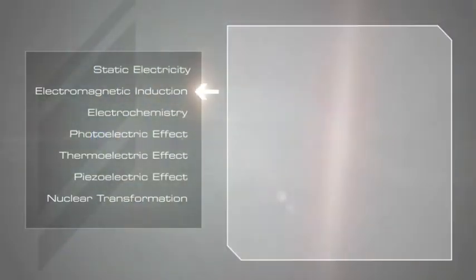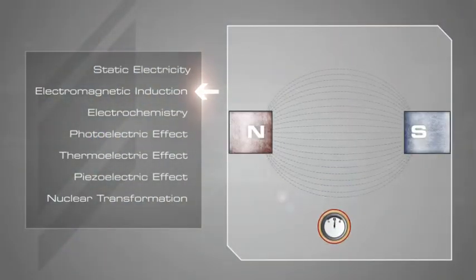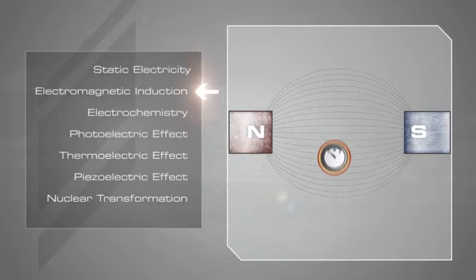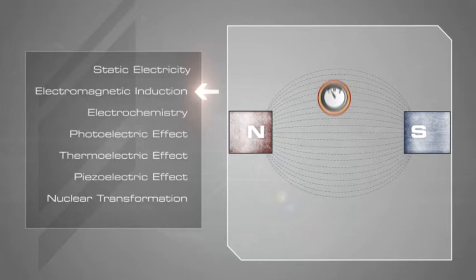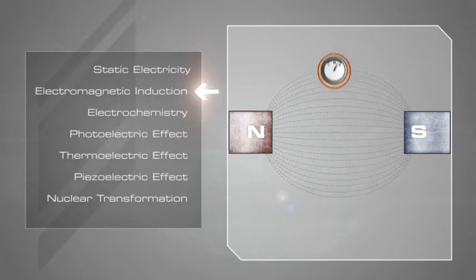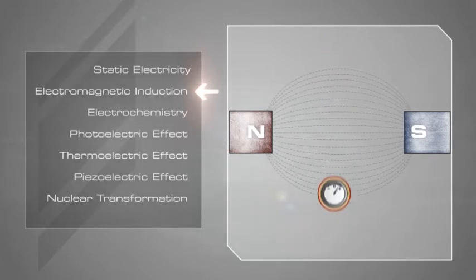Electromagnetic induction is the production of an electric current across a conductor moving through a field. Electromagnetic induction is the fundamental principle for the operation of generators, transformers, induction motors, electric motors, synchronous motors, and solenoids.